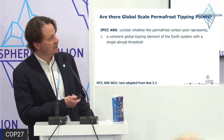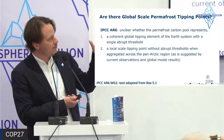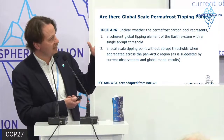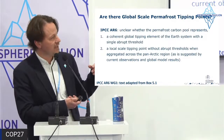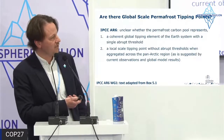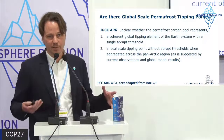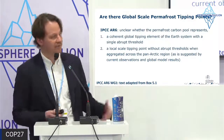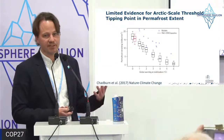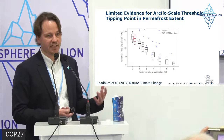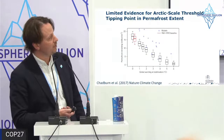The two options are: (1) permafrost tips at four degrees of global warming as a single coherent threshold, or (2) permafrost is rather a local-scale tipping point without abrupt thresholds when aggregated across the pan-Arctic region. The IPCC notes the latter is what is currently suggested by observations and global model results — many local tipping points but not a coherent threshold at the global level. The available knowledge supports this second statement.